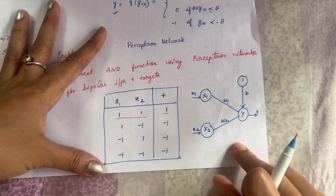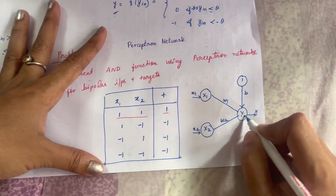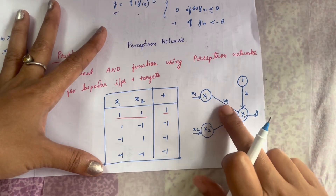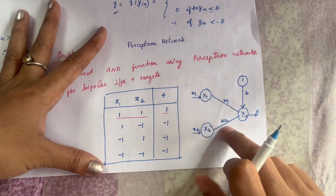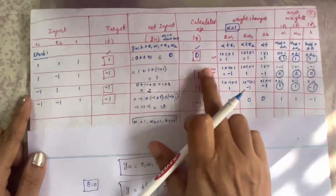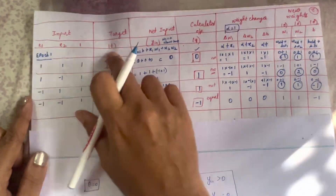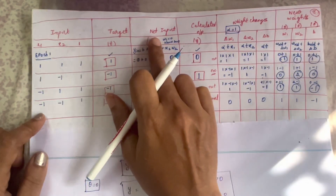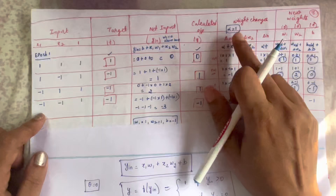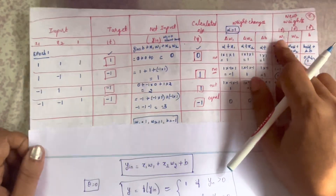Now I will draw the Perceptron Network diagram. Since we have two inputs, we have two nodes x1 and x2. From these we compute y_in, apply the activation function, and get the output y. We also have a bias input with bias value b. Since there are two input nodes, two weights are associated: w1 and w2. The tabular column contains six columns: inputs x1, x2, and bias; the target value; the net input y_in; the output y after activation; weight changes del_w1, del_w2, del_b; and new weights w1, w2, and b.